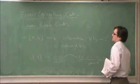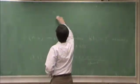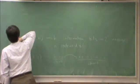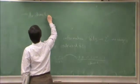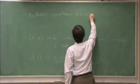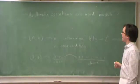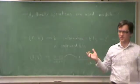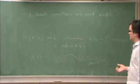What's interesting about linear block codes is that arithmetic operations are used modular 2. That means we use all of the usual mathematical rules, but everything is mod 2.